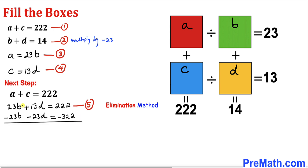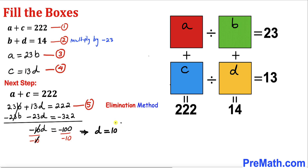We are going to add these two equations. The 23B terms cancel each other out, and we get negative 10D equals negative 100. Dividing both sides by negative 10, we end up with D equals 10. This is our D value.